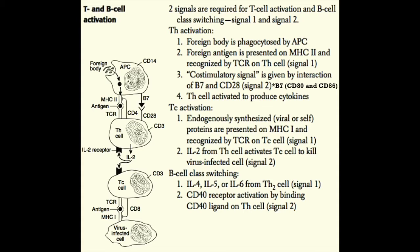Once the T helper cell is activated, it upregulates cytokine genes and surface receptors, including CD40 ligand. CD40 ligand on the T helper cell binds to CD40 on the B cell surface, bidirectionally stimulating the B cell to become active. The B cell then upregulates cytokine receptors, which bind the cytokines the T helper cell is secreting. Because this is a TH2 cell, it produces IL-4, IL-5, and IL-6. These cytokines promote B cell clonal expansion, memory cell formation, and plasma cell generation.